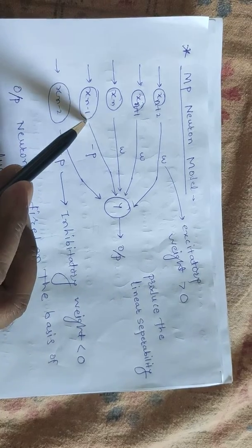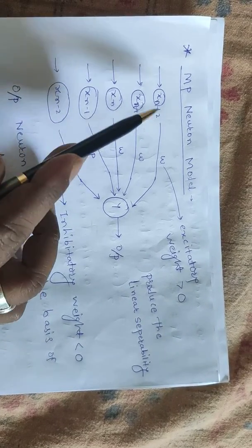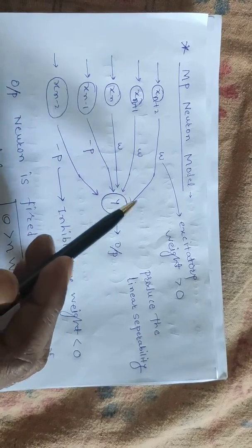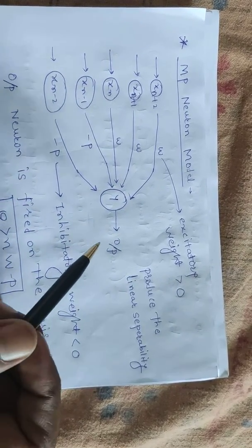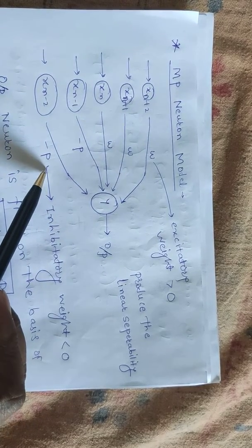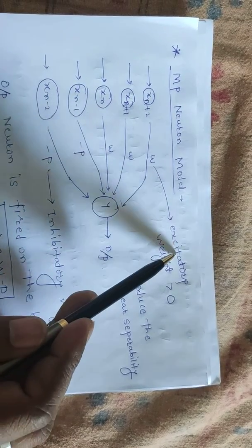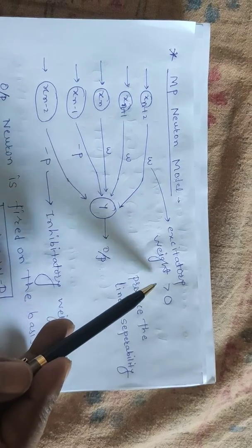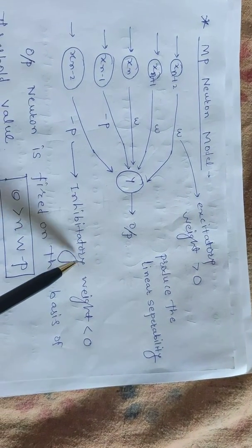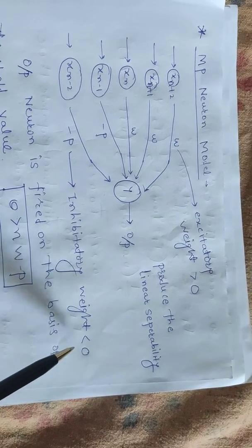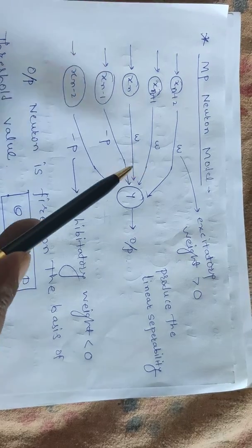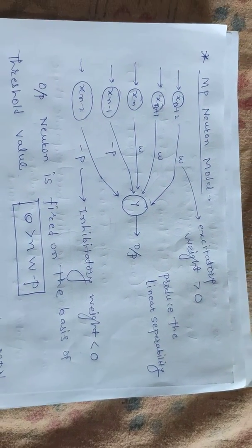These are the various weights corresponding to the inputs. The weights are of two types in the MP neuron model: w and minus p. W indicates the excitatory weights, which is greater than zero, and p indicates the inhibitory weights, which is less than zero. So there are two types of weights we can mention here as w and p.